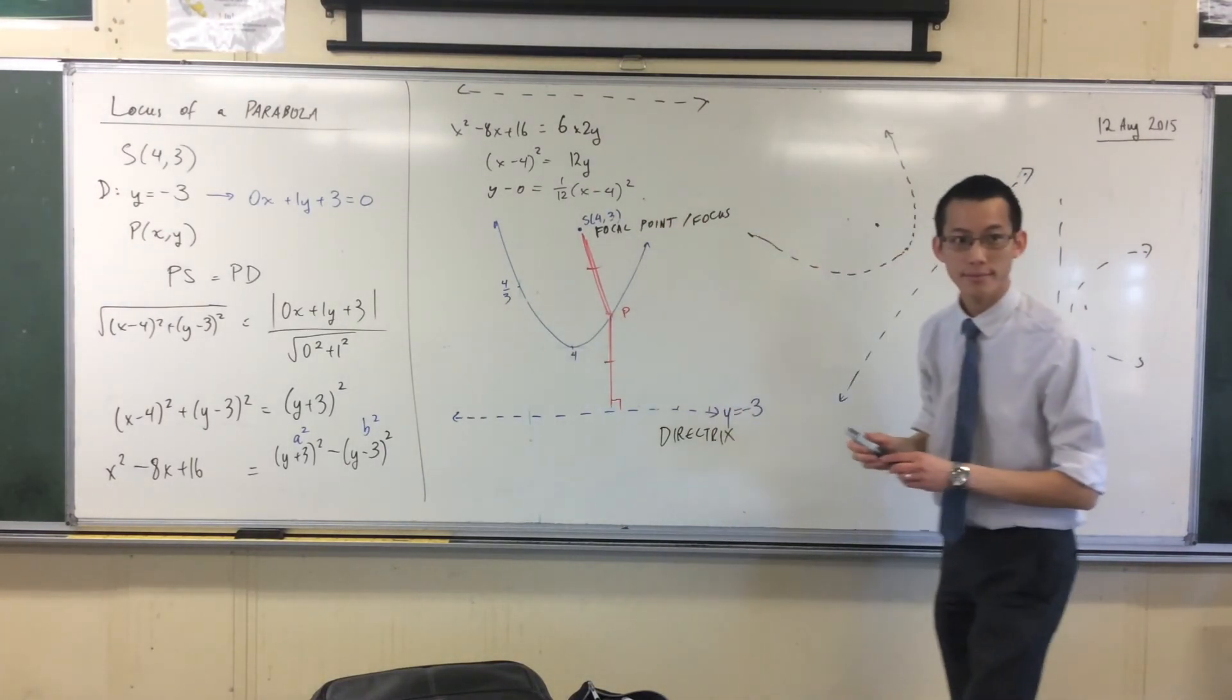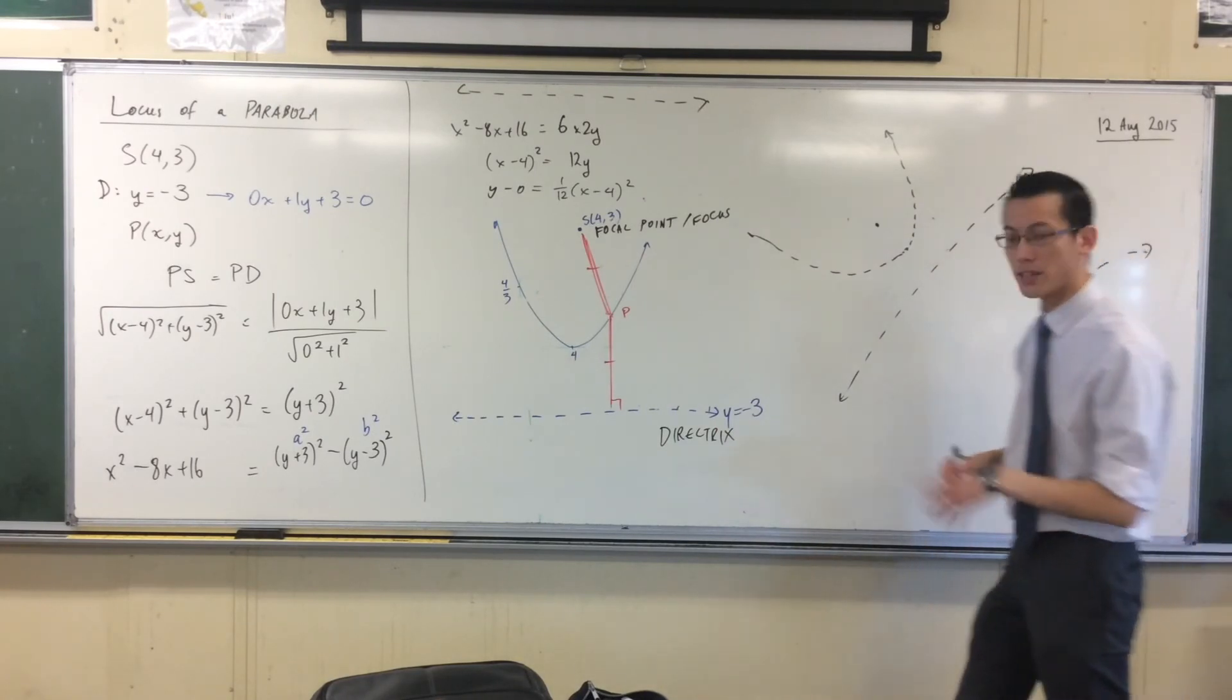So you can never have the parabola facing into the line? Correct. Because here's what would happen.